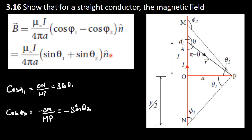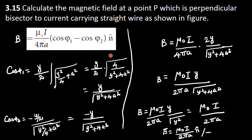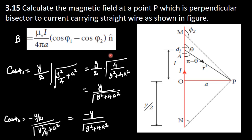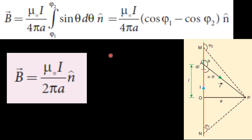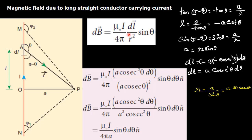This is the long conductor derivative. This gives mu naught i divided by 4 pi a in this situation.